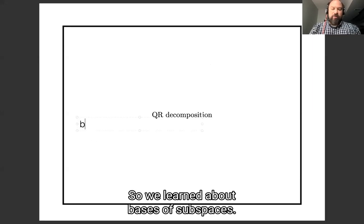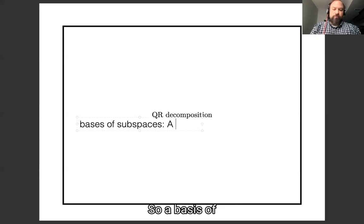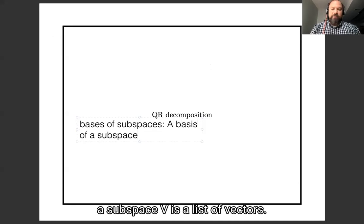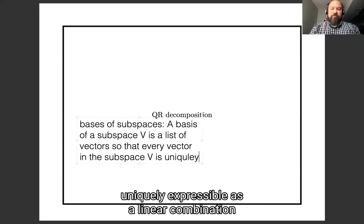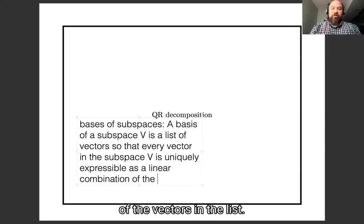So we learned about bases of subspaces. A basis of a subspace is a list of vectors so that every vector in the subspace V is uniquely expressible as a linear combination of the vectors in the list.